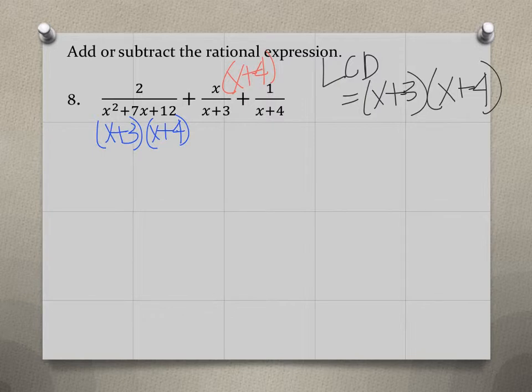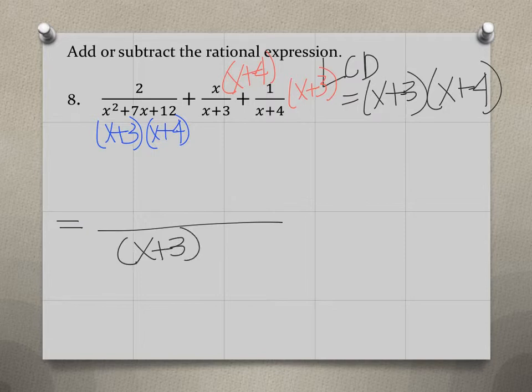Then in the third rational expression, we have an x plus 4 in the denominator, but we're missing that x plus 3. So we're going to multiply this third rational expression by that missing x plus 3 on the top and bottom. But I'm going to focus on the top because the denominator is going to be the same no matter what. So I'm going to write my denominator for all three at the bottom.